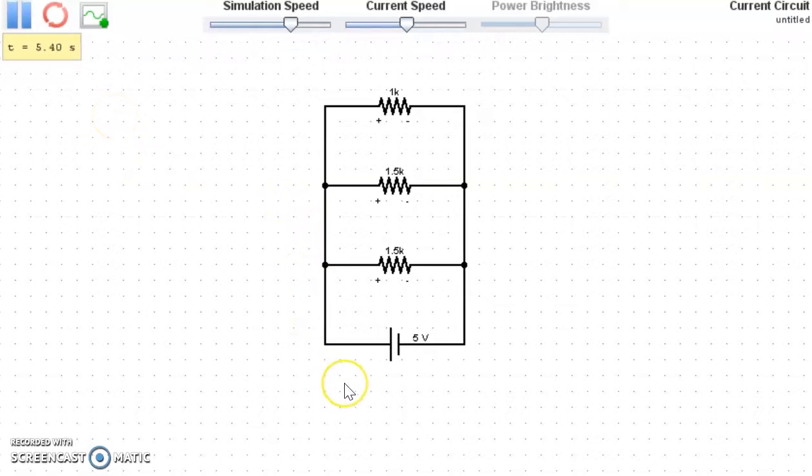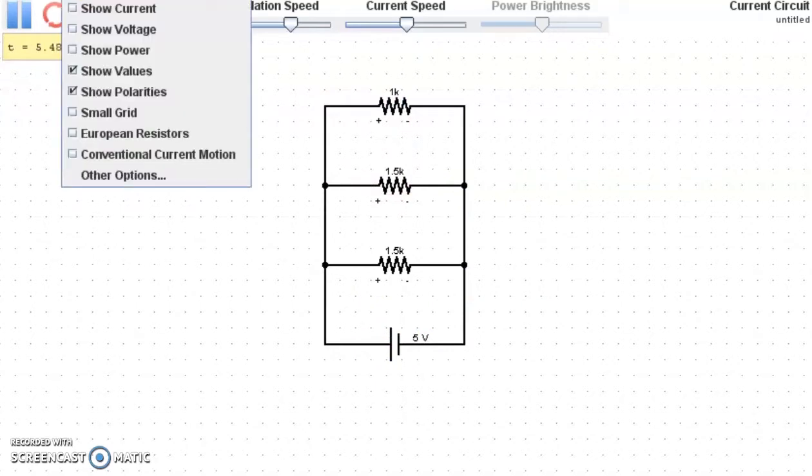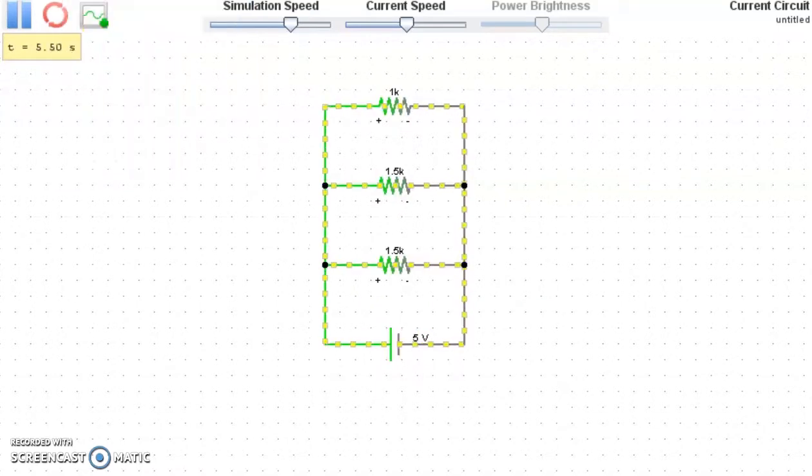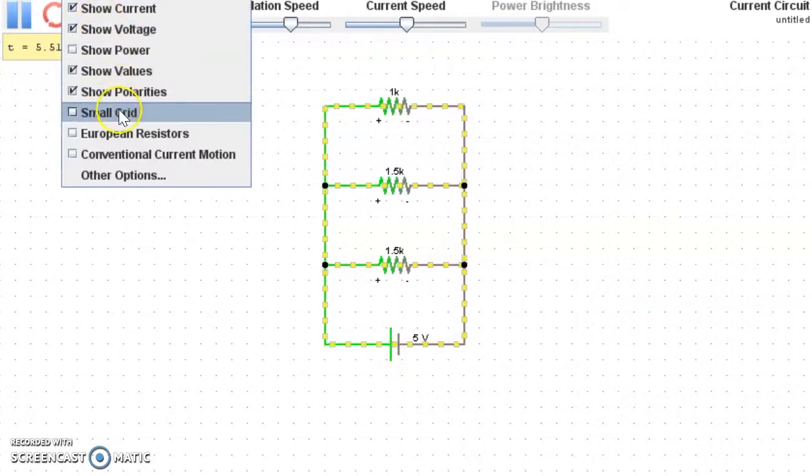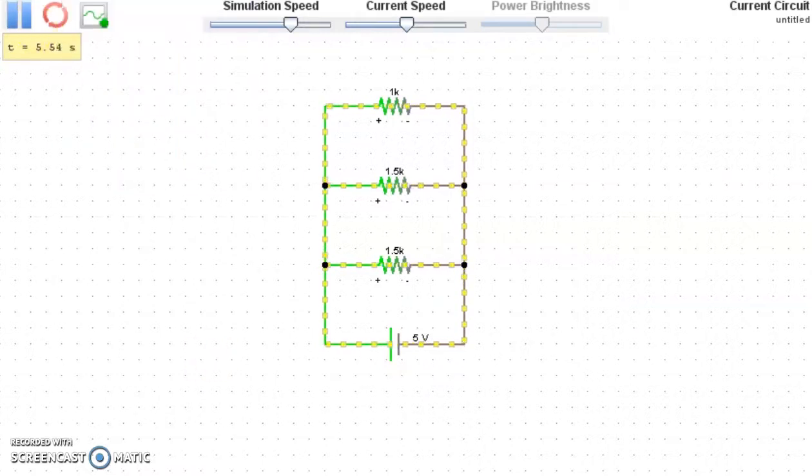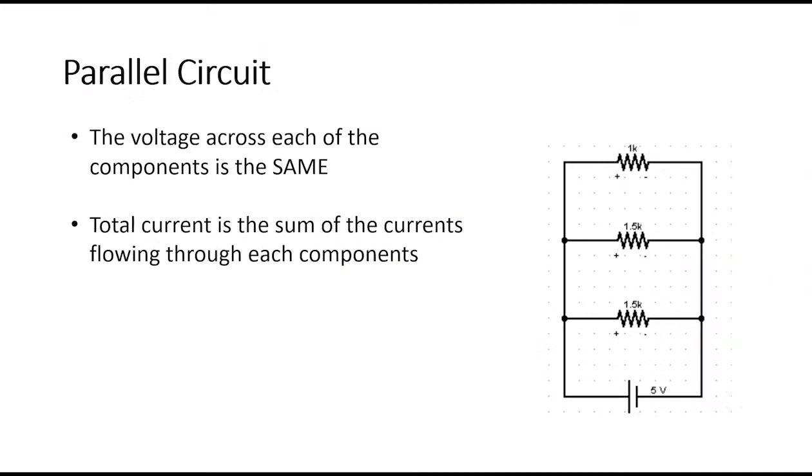Also, the total current for this circuit is the sum of the current that will pass through each resistor as shown here. So let's try to run this simulation. So there you go. This is the circuit diagram for our parallel circuit example.